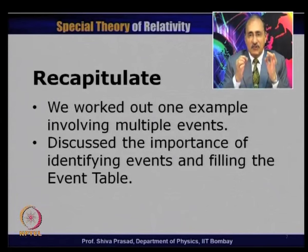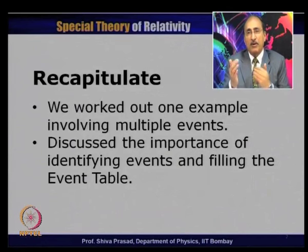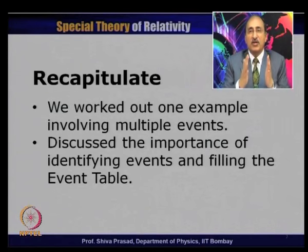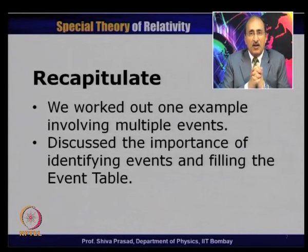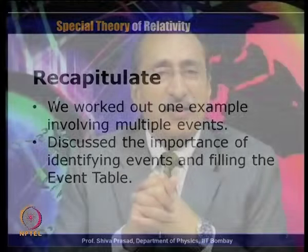The basic trick of working out relativity problems is: look at the events, fill in the event tables, find out what information is available in your frame, and whatever is available in a different frame, bring it back to your frame by using an appropriate transformation. In today's lecture, we will start with one more example involving the speed of light before we go a little bit ahead in the course.